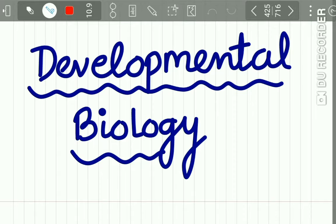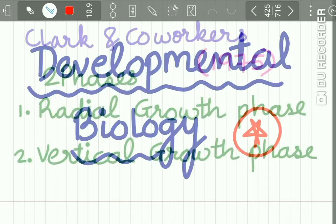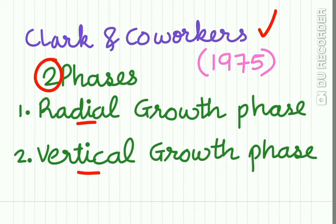Now the developmental biology of malignant melanoma — very important. Clark and co-workers described the developmental biology of malignant melanoma in two phases: the radial growth phase and the vertical growth phase.